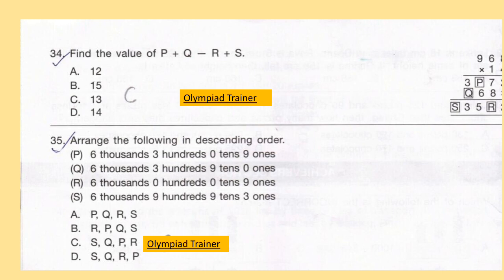Question 35: Arrange the following in descending order.